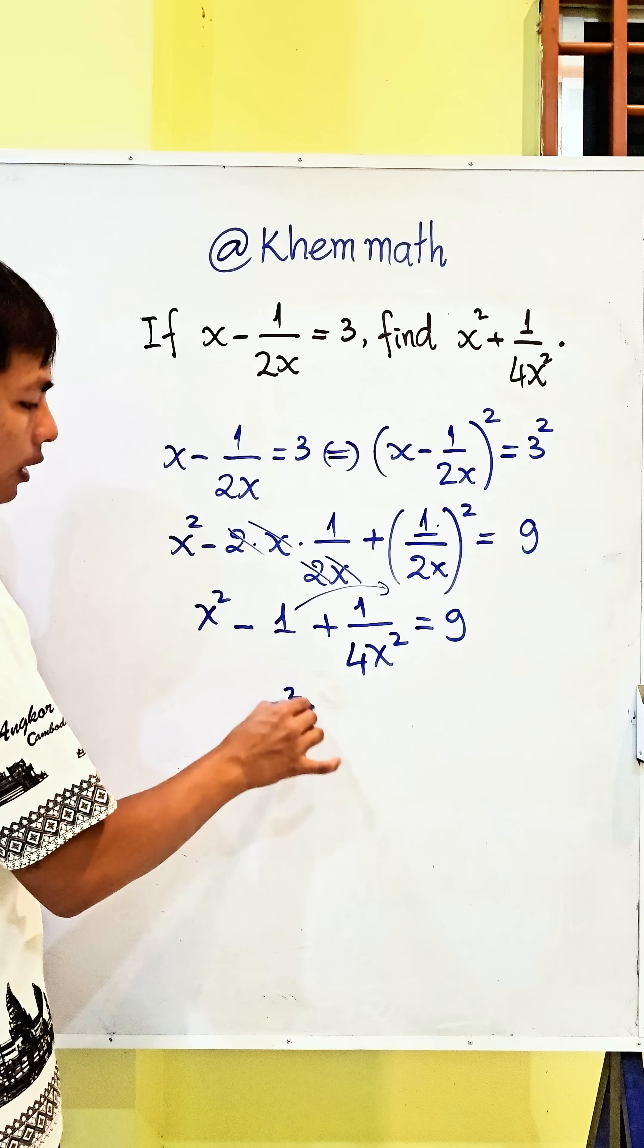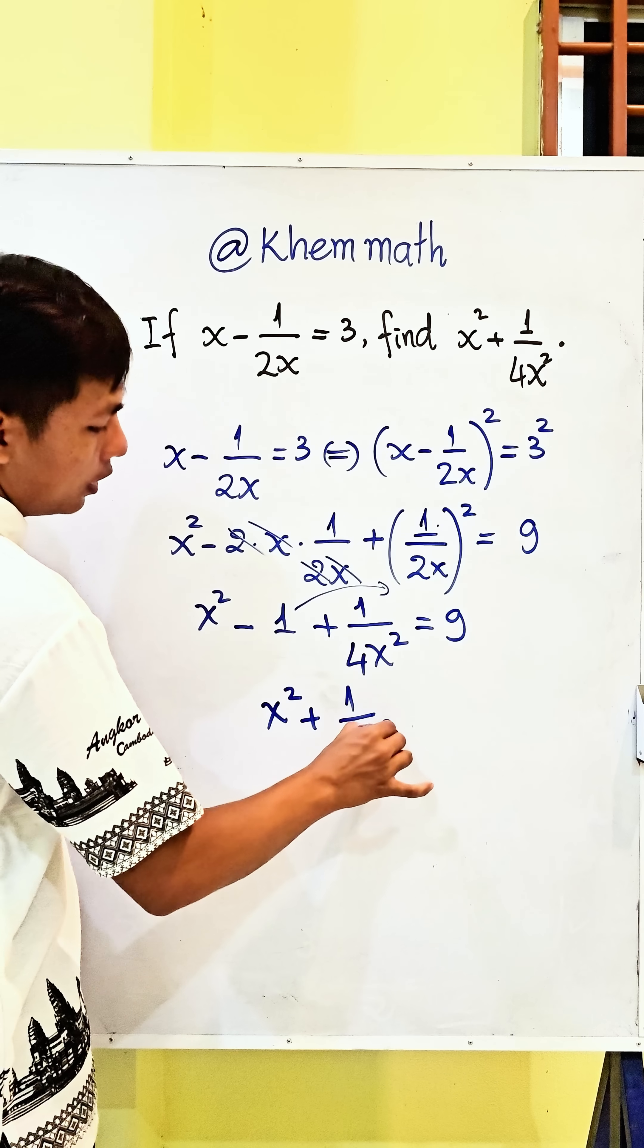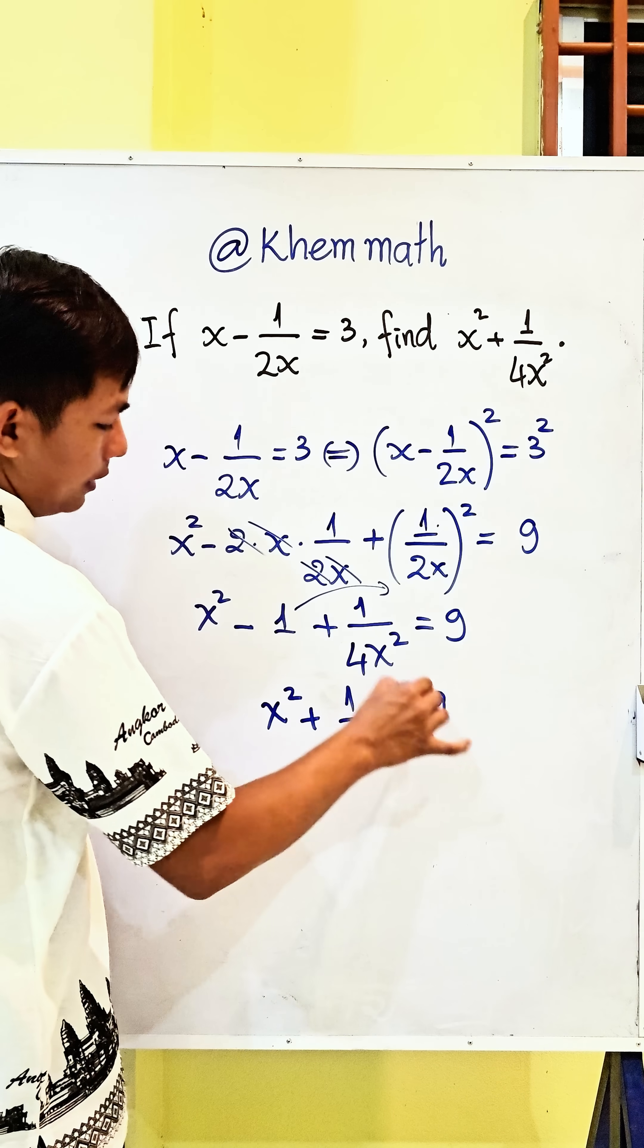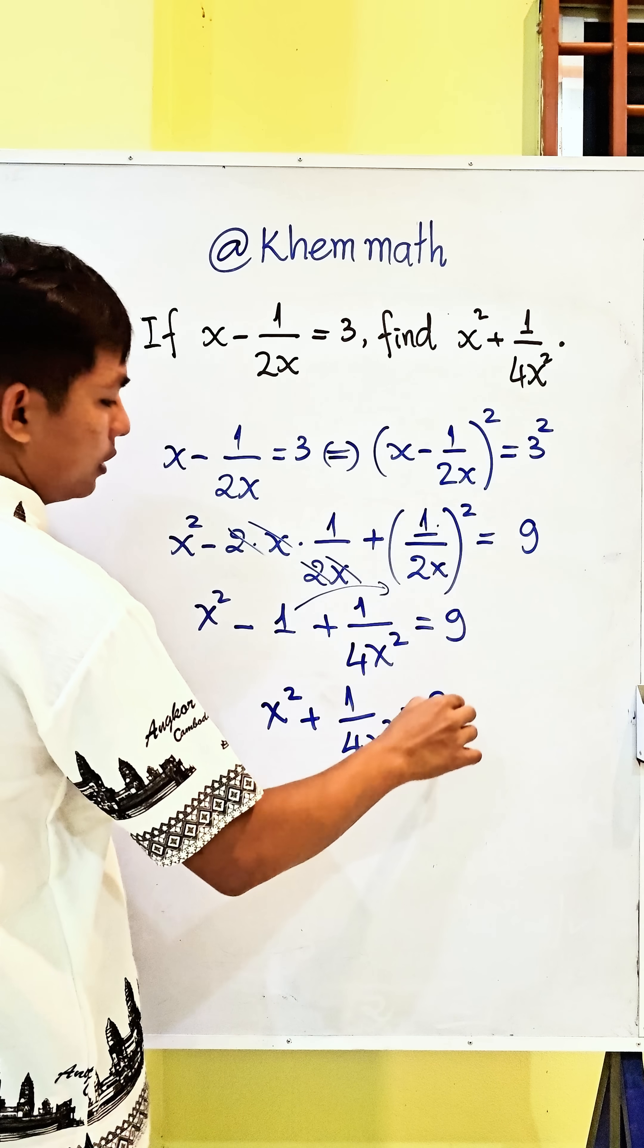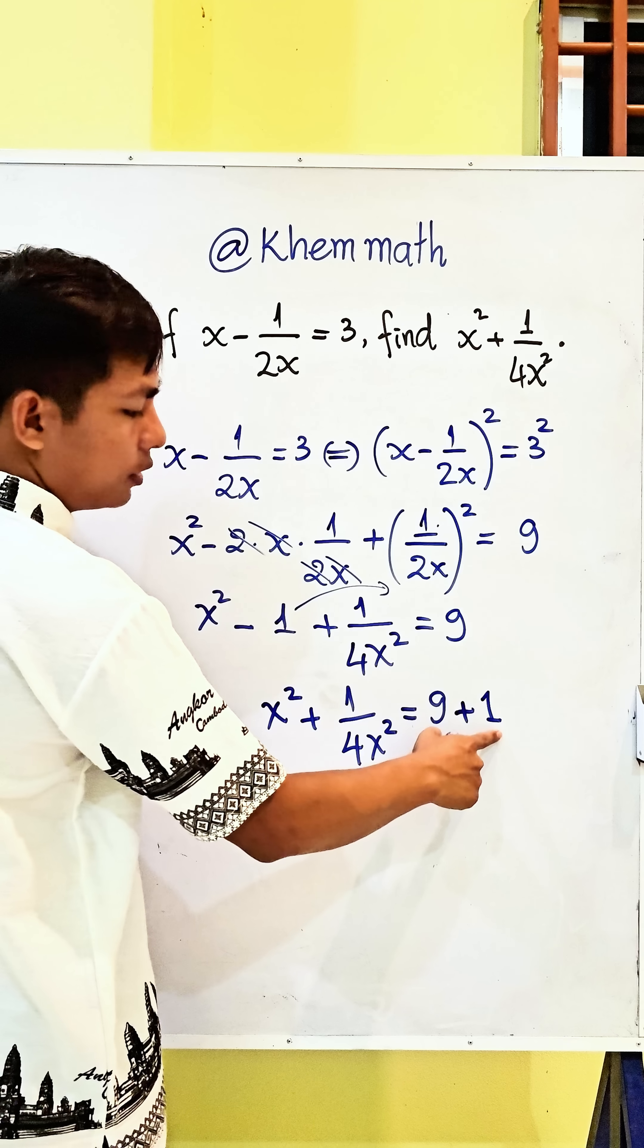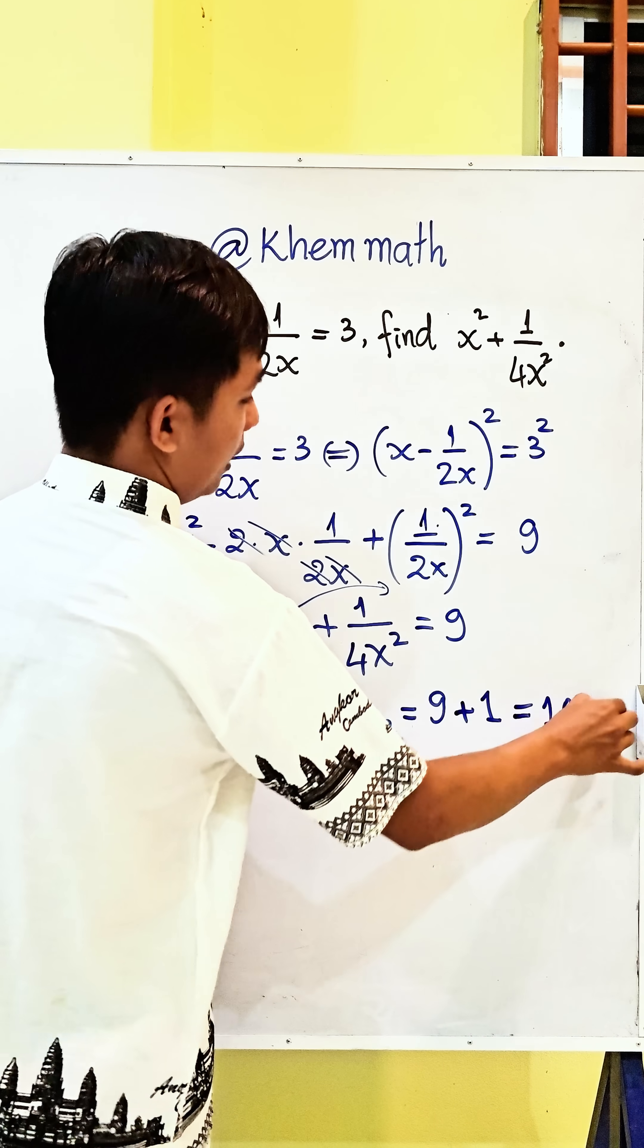We get x squared plus 1 divided by 4x squared equals 9. And here we get this negative 1. We change to the right hand side, we get this positive 1. So we get 9 plus 1 and it equals 10, is our answer.